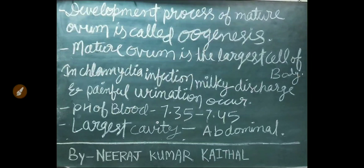The development process of a mature ovum is called oogenesis. The mature ovum is the largest cell of the body. In chlamydia infection, milky discharge and painful urination are seen. Normal blood pH is 7.35 to 7.45. The largest cavity of our body is the abdominal cavity.